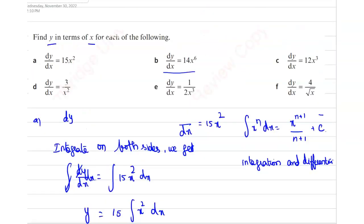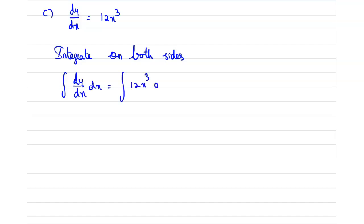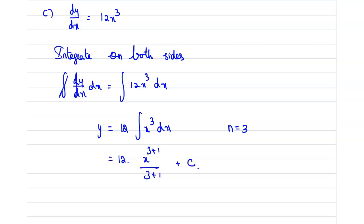Now consider the third one. dy/dx equals 12x power 3. Integrating both sides, integration and differentiation cancel, so y equals 12 times integral of x power 3 dx. Here n equals 3, so applying the formula gives 12 times x power 4 divided by 4, plus c. Cancelling 12 and 4 gives 3, therefore y equals 3x power 4 plus c.